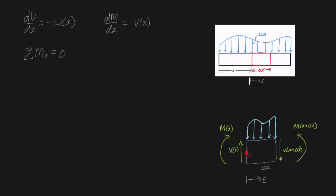What's the sum of moments around point O? Well, first things first — we know that there will be m(x), which is going to be clockwise. And the shear force will be producing a moment as well: v(x + Δx), but it needs to be times by the distance, which is times by Δx. And we also know there is another moment due to this distributed load.